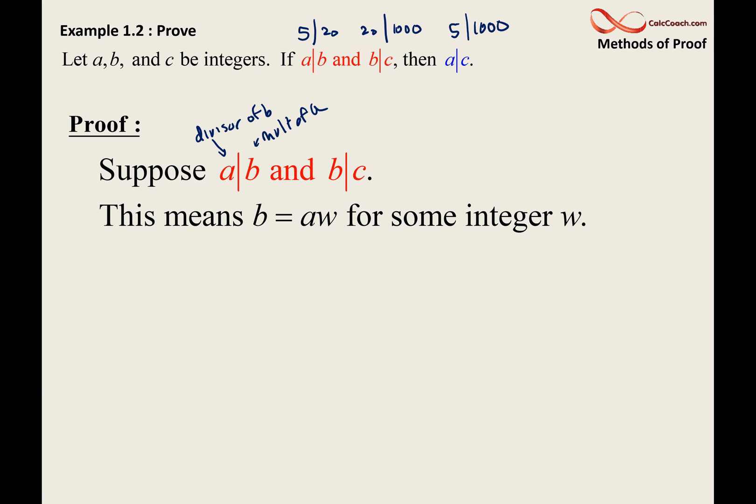b divides c. Well, that means that c can be written as some multiple of b. Now, don't use the same variable w. Change it up. Use a different variable z. It's not necessarily going to match whatever the other variable is. And so, this is the definition of what's going on when we say that a divides b and b divides c.